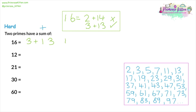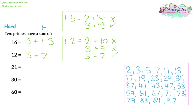Moving on to 12, using the same method. Start with 2: 12 is 2 plus 10, but 10 is not prime. Then 3: 12 is 3 plus 9, and 9 is not prime — it has three factors: 1, 3, and 9. Then 5: 12 is 5 plus 7, and 7 is a prime number. So 12 is the sum of 5 and 7. For question 3, which is 21: try the smallest prime first — 21 is 2 plus 19, and 19 is a prime number. So 21 is the sum of 2 and 19.